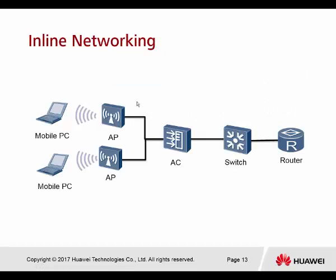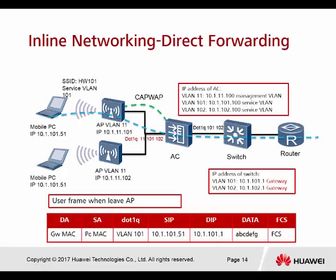This is the first example: inline networking with direct forwarding. After CAPWAP is already established — the green colored dot represents the CAPWAP tunnel — when a user wants to access the network, they pass through the AP, then go directly through the AC, through the switch, and reach the gateway router. You'll notice the destination address is the gateway address and the PC address. My PC wants to go to this gateway at 10.1.1.1, pointing to the gateway on the switch. The IP address belongs to VLAN 10.